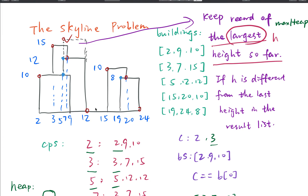Let's see how to use these two data structures. If we are given five buildings: [2,9,10], [3,7,15], [5,12,12], [14,20,10], and [19,24,8]. We already know the key points and we need to build the tree map. For the given five buildings we may have ten key-value entries in the tree map.